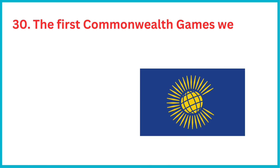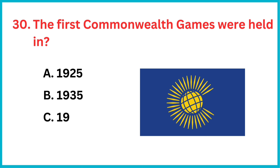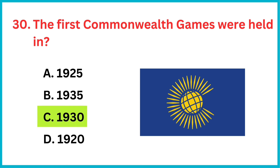The first Commonwealth Games were held in which year? The correct answer is option C: 1930.